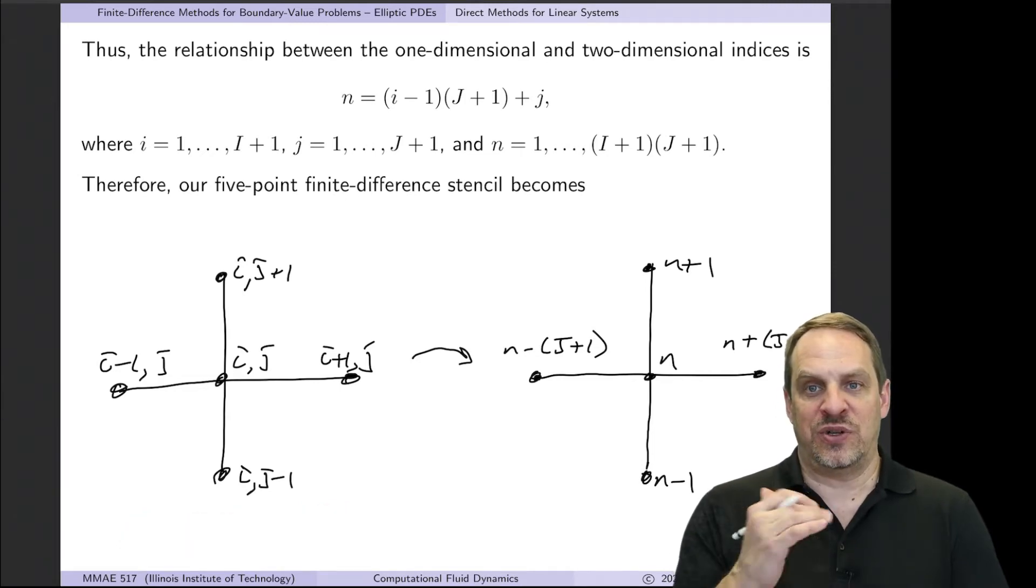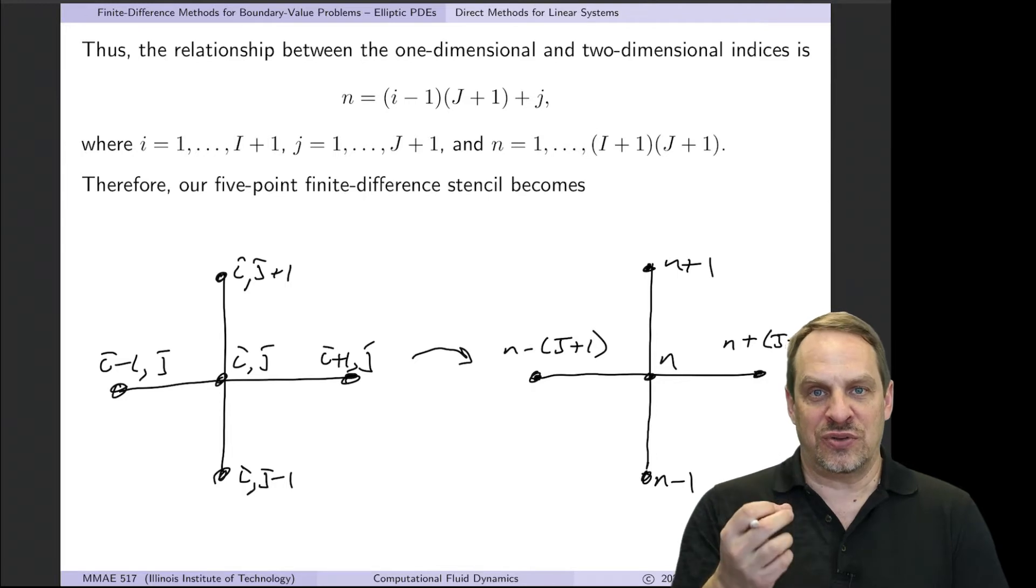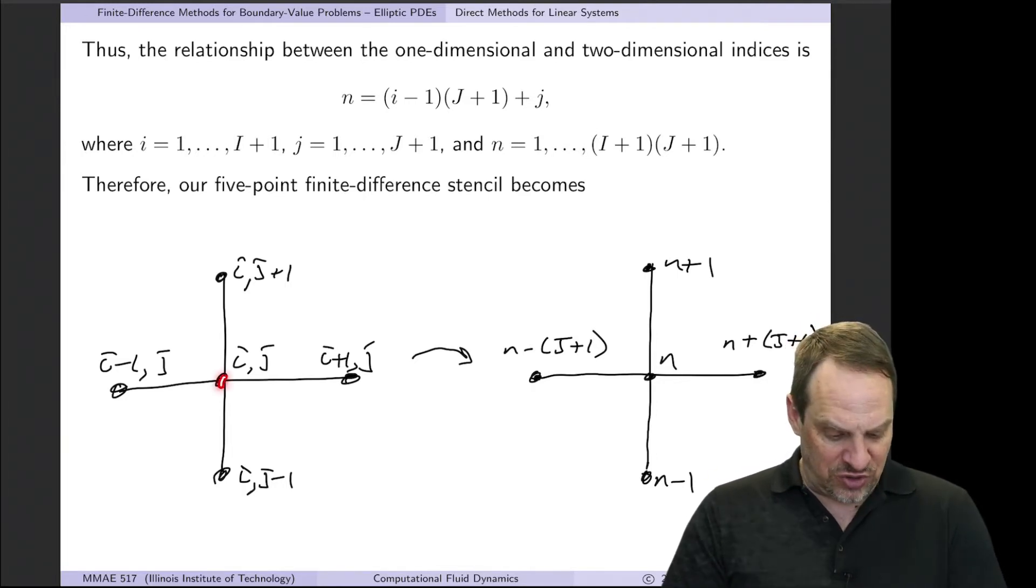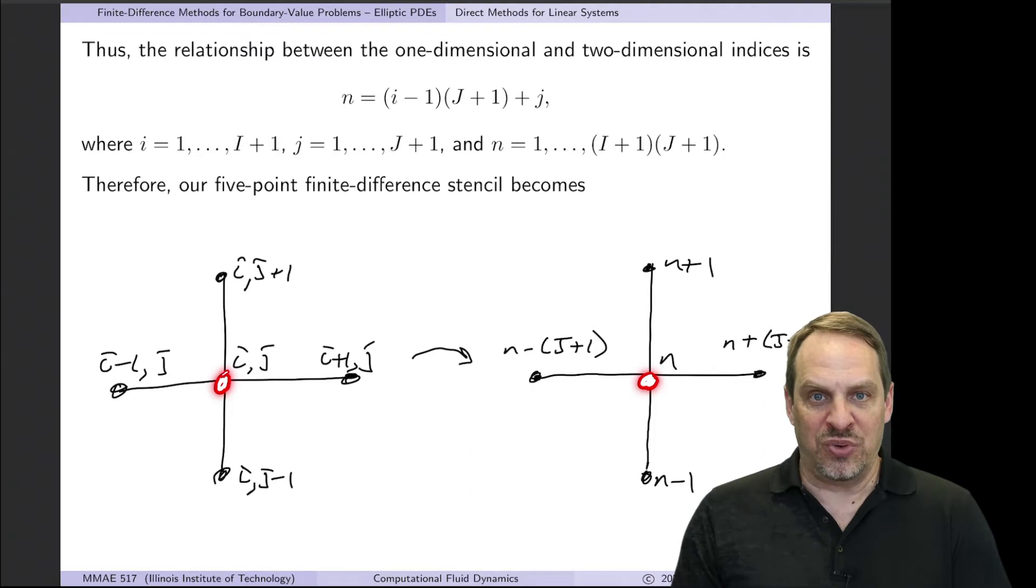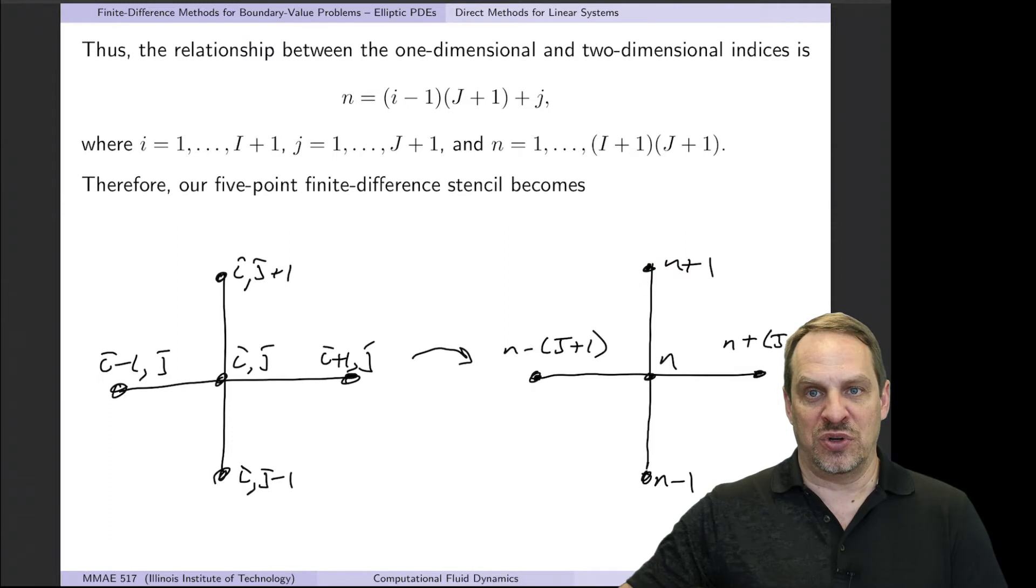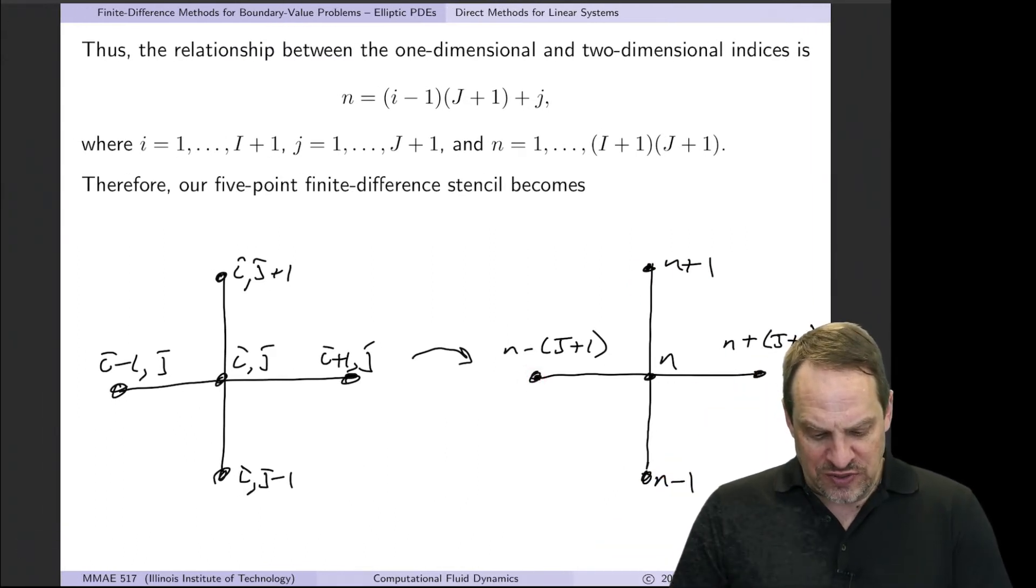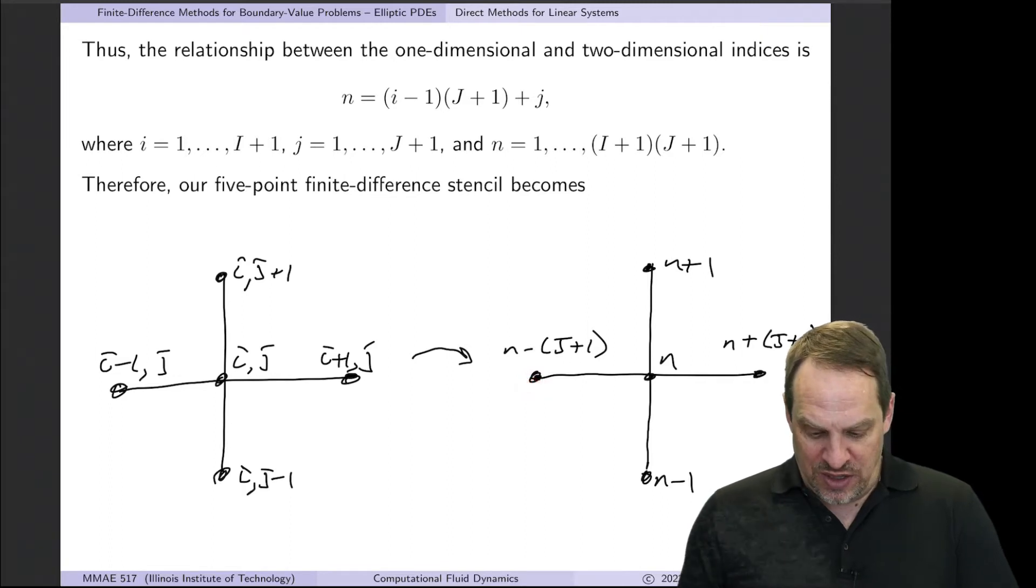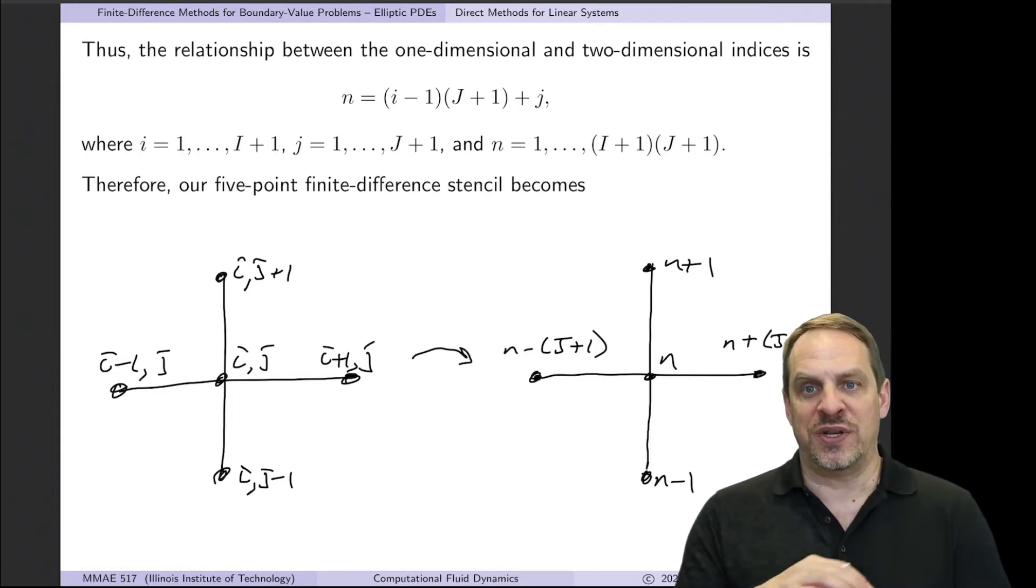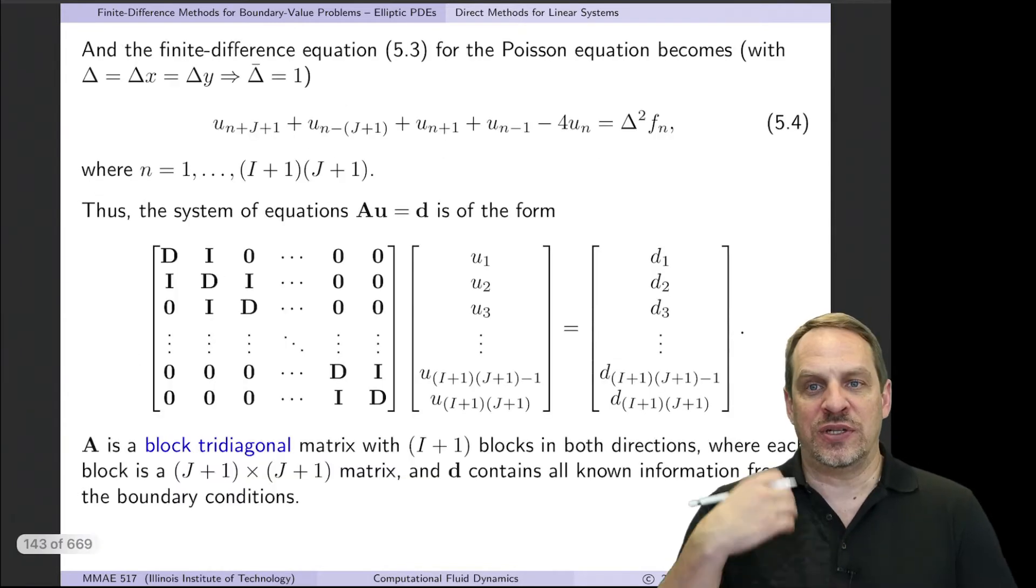One way to show this is using the finite difference stencil. Here's the five-point finite difference stencil we had in the previous video, using second-order accurate central difference approximations to the second-order derivatives. We have our generic ij point, a point to the right i plus 1 j, point to the left i minus 1 j, point below ij minus 1, and a point above ij plus 1. Now those same five points are mapped as follows: the ij point is now the nth point, the point below is n minus 1, the point above is n plus 1 because we're going bottom to top. The point to the left is n minus capital J plus 1, so we shift over capital J plus 1 to pick up this point. The point to the right is n plus capital J plus 1. Same finite difference stencil, just different accounting of the locations of the points within the grid.